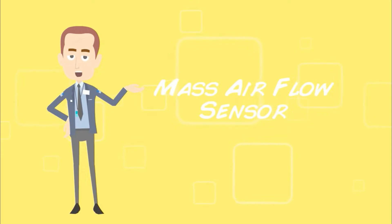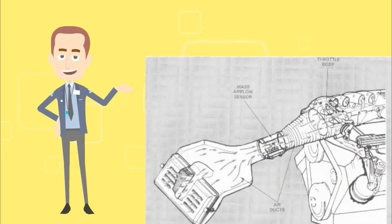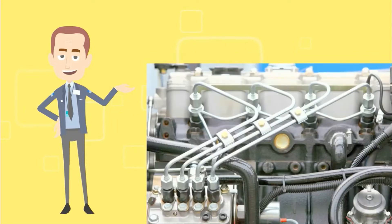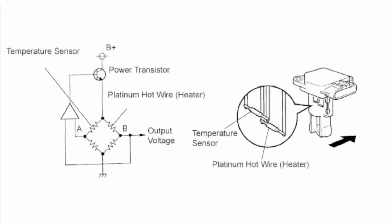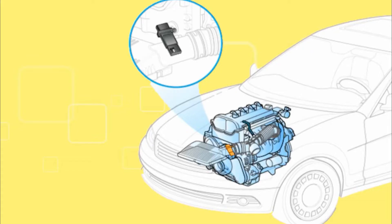Mass airflow sensor measures the volume of air entering into the engine. This information helps the ECM to balance and deliver the correct fuel mass to the engine. It produces more current to keep the temperature required by the manufacturer. It is located on the air cleaner box.